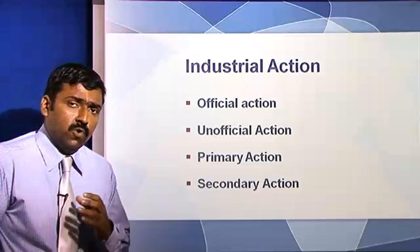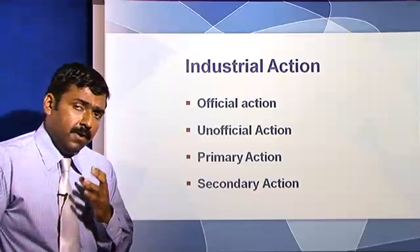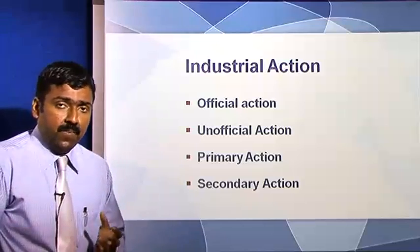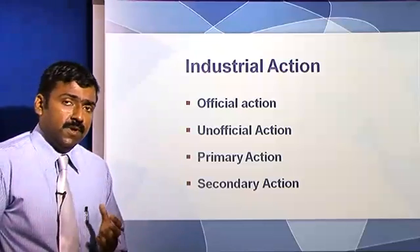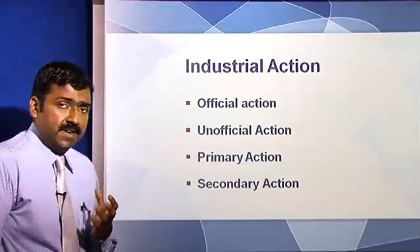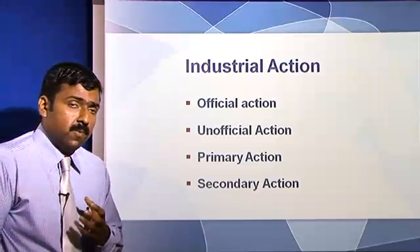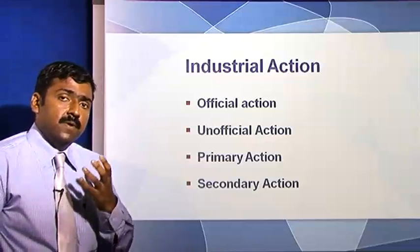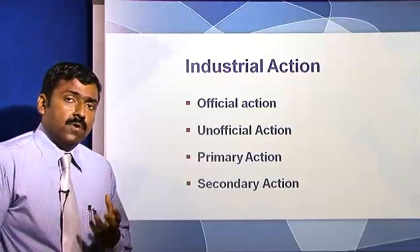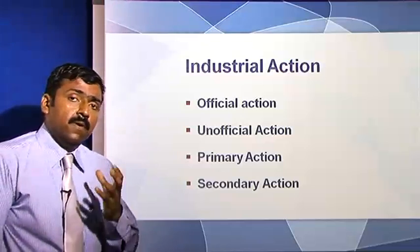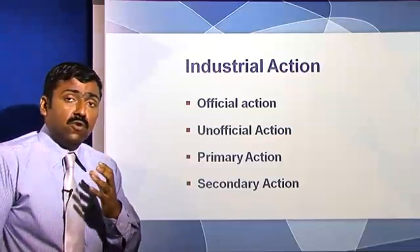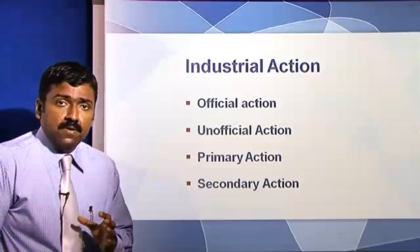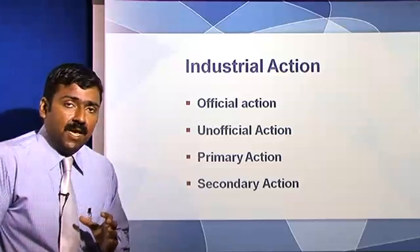Official action is with the support of the trade unions, wherein you adopt an approach called strike — wherein you refuse to work. That is official, and a strike is recognized if it is for a legal purpose. Unofficial action is wherein without the support of the unions, a group of employees resort to activities such as non-cooperation and they cease working. This takes the form of unofficial action.